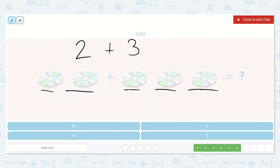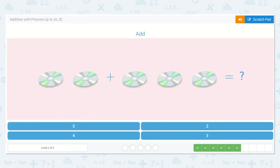How many is that all together? Let's count. 1, 2, 3, 4, 5. That is equal to 5. Here's the 5.